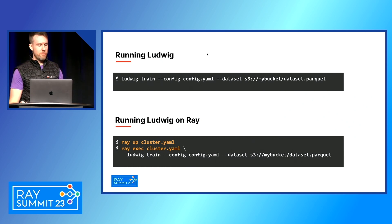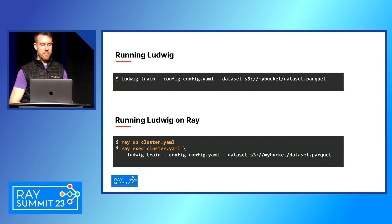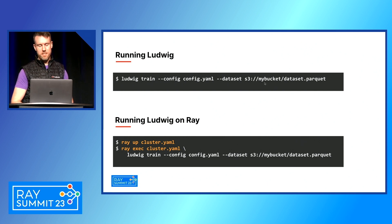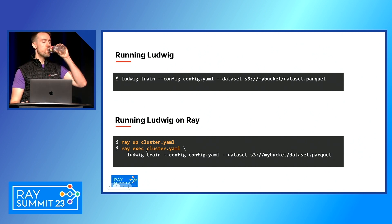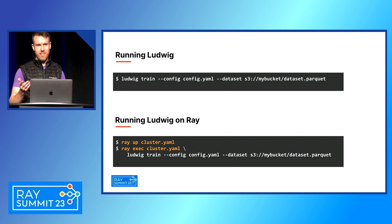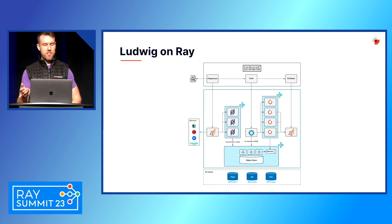Running Ludwig is very straightforward. We have a Python API and a command line utility. Running locally is as simple as saying 'ludwig train' with your config and dataset. Running on Ray is just as easy — you create a Ray cluster and submit that training command to the cluster. Under the hood, Ludwig will detect that you're running on a Ray cluster and automatically distribute the job across multiple workers.